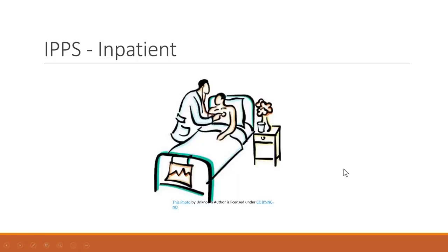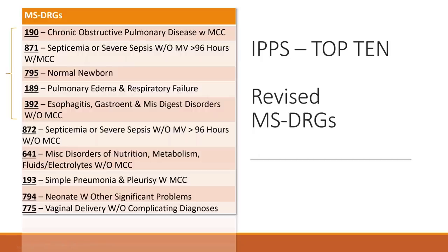For inpatient, these were the top 10 changed DRGs. At the top we have DRG 190, which was the most commonly changed. Septicemia — DRG 871 — is the second, and nobody would probably be surprised by that. I was surprised to see normal newborn DRG 795 as number three. DRG 392 was also a bit surprising to me. We are going to concentrate on and analyze the top five today — DRG 190 through 392. This listing can also be used if you want to do some auditing or education focused on your coders.